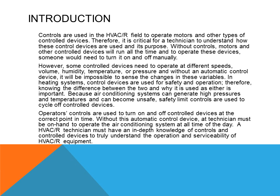In air conditioning systems, control devices are used for safety and operation. Knowing the difference between the two is important. Because air conditioning systems can generate high pressures and temperatures and can become unsafe, safety limits are used to cycle off the control device. Operator controls are used to turn on and off control devices at the correct point in time. Without automatic control, a technician must be on hand to operate the system at all times.